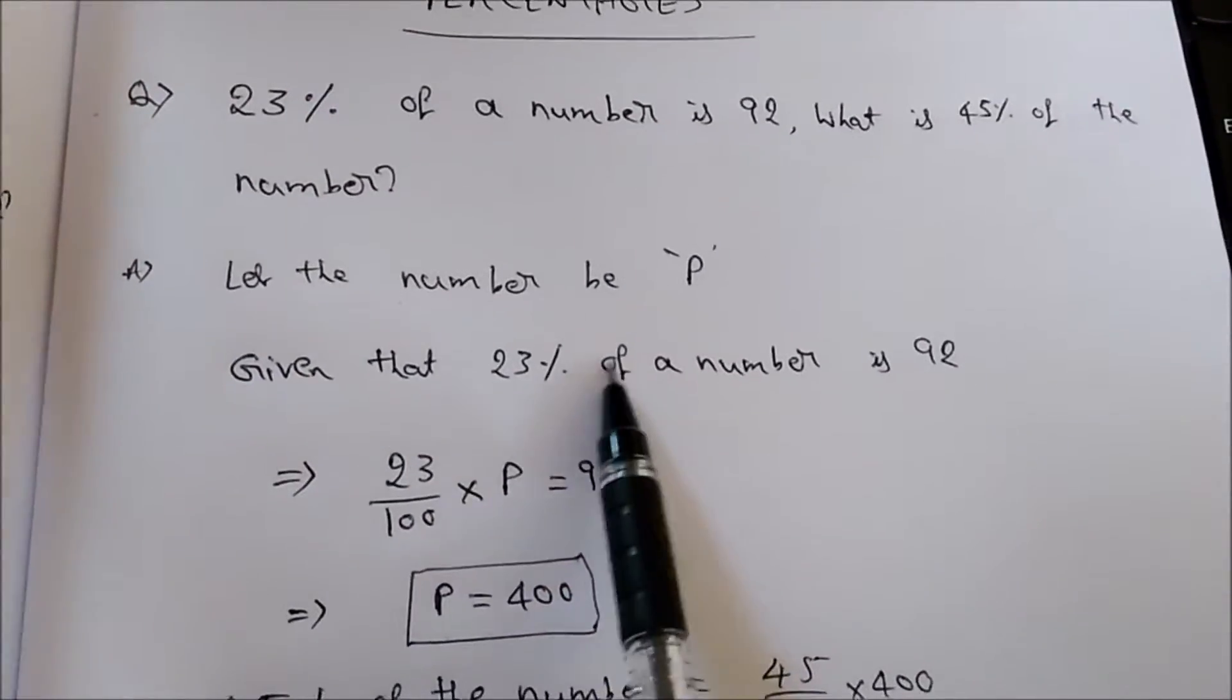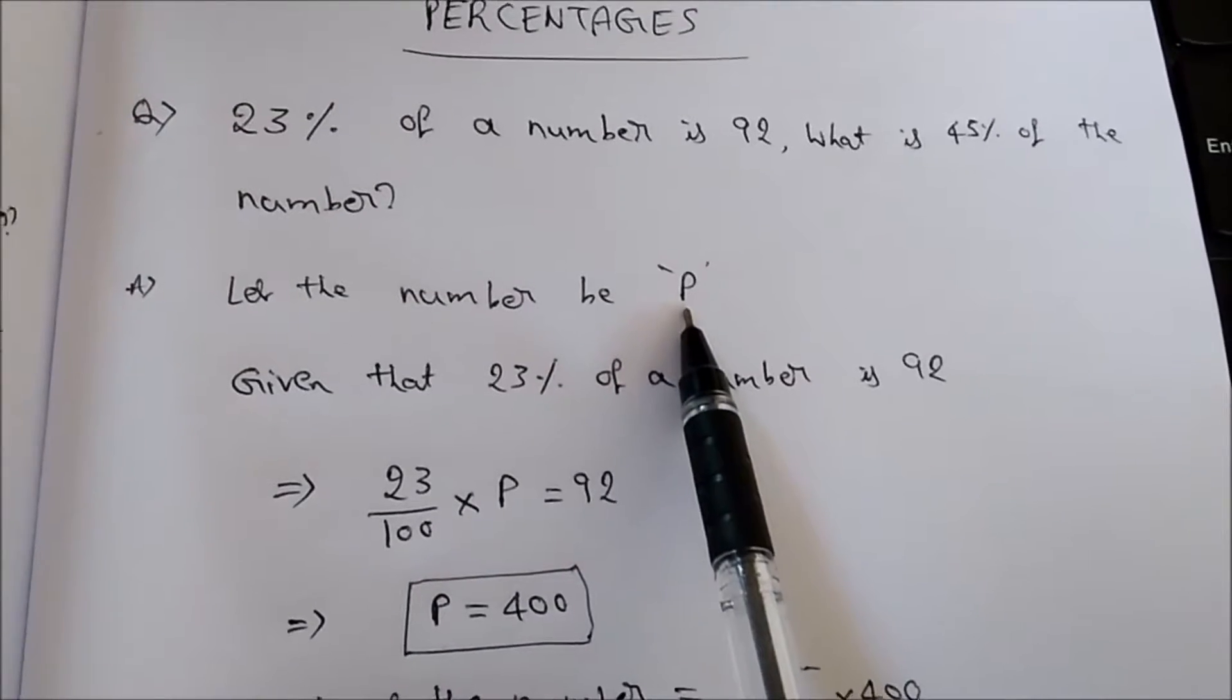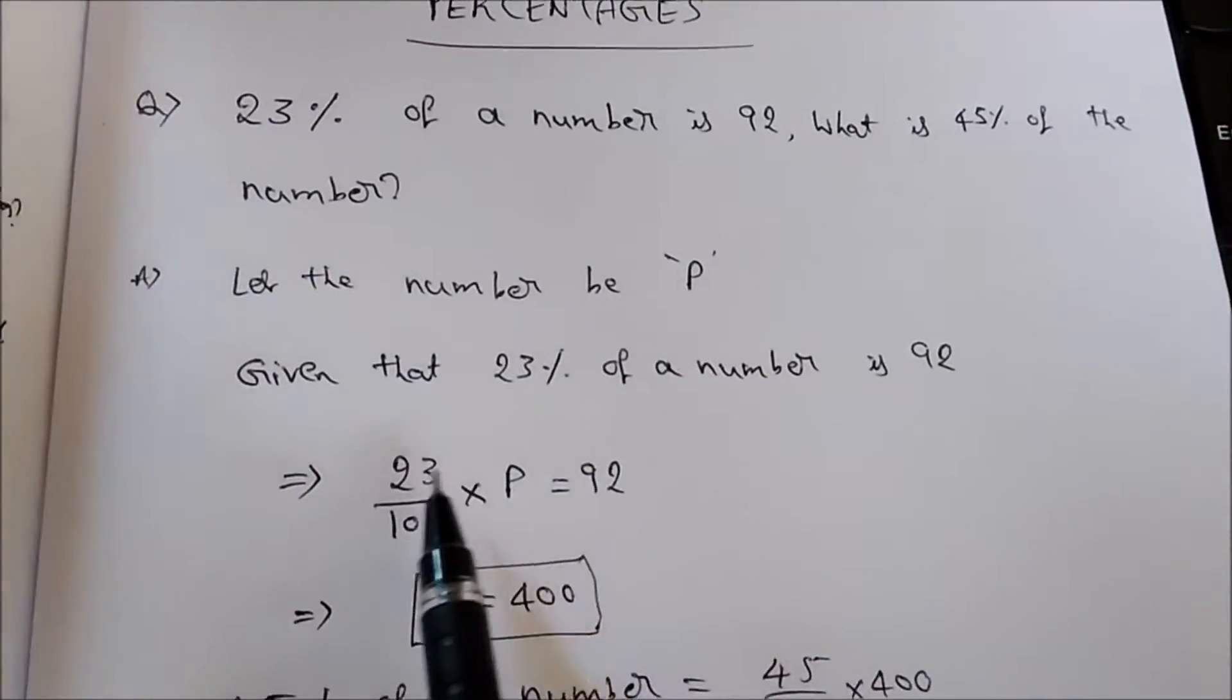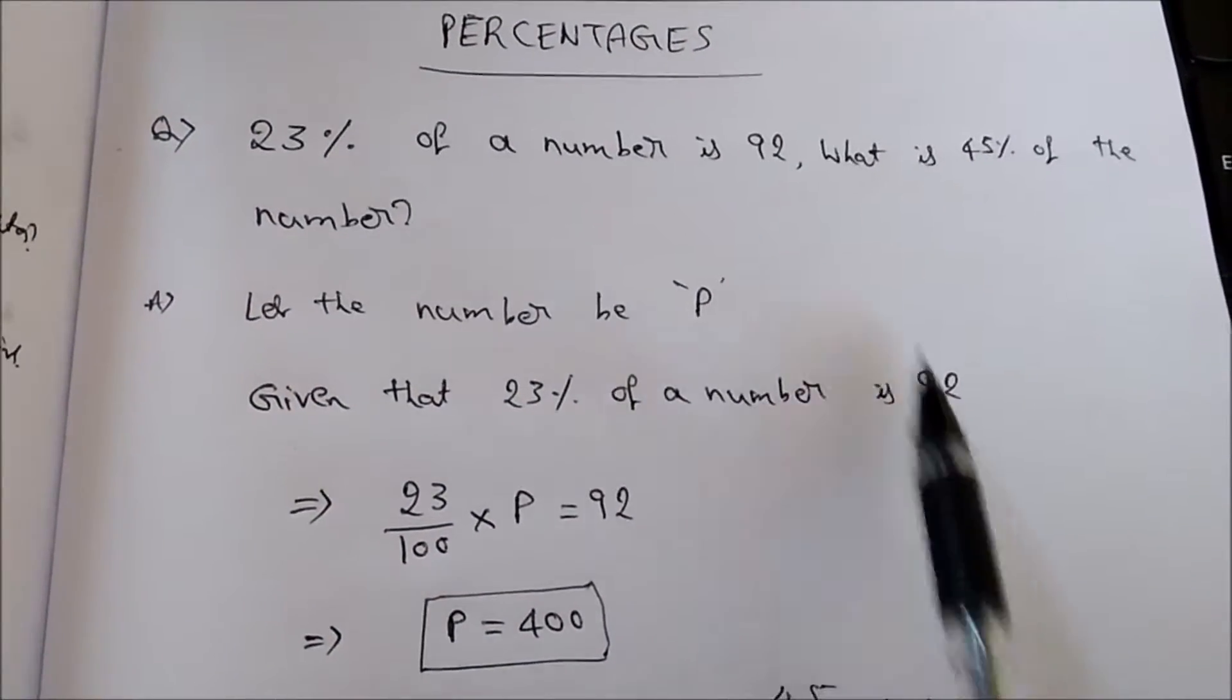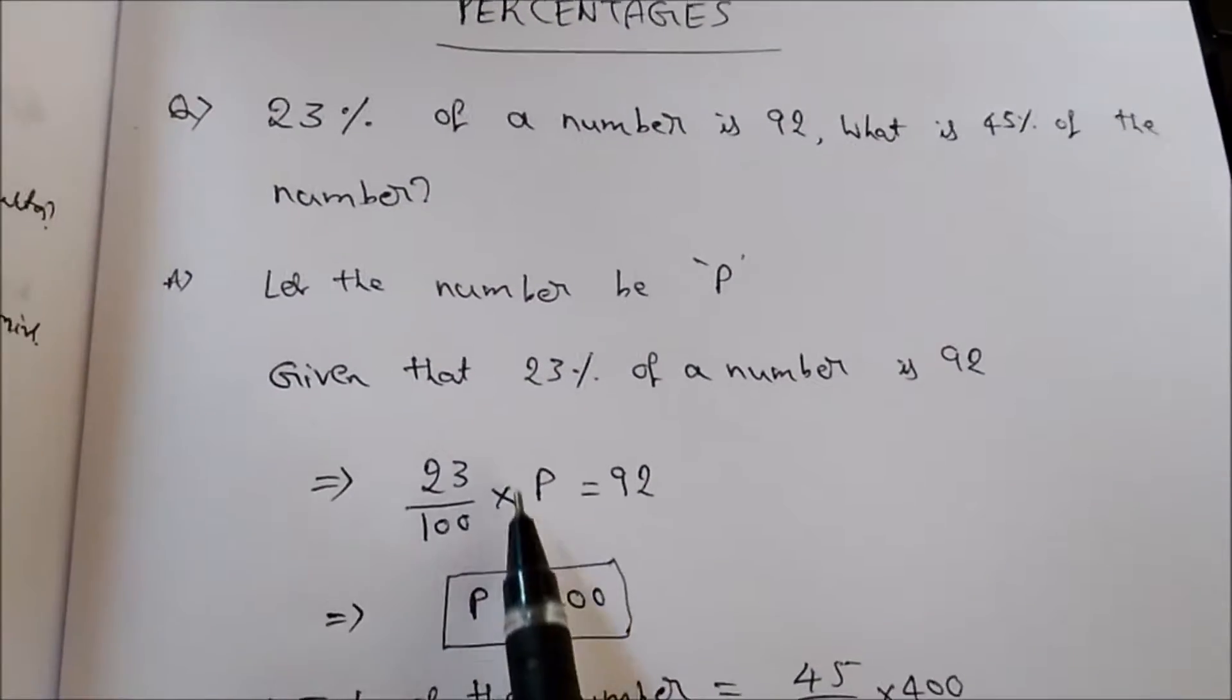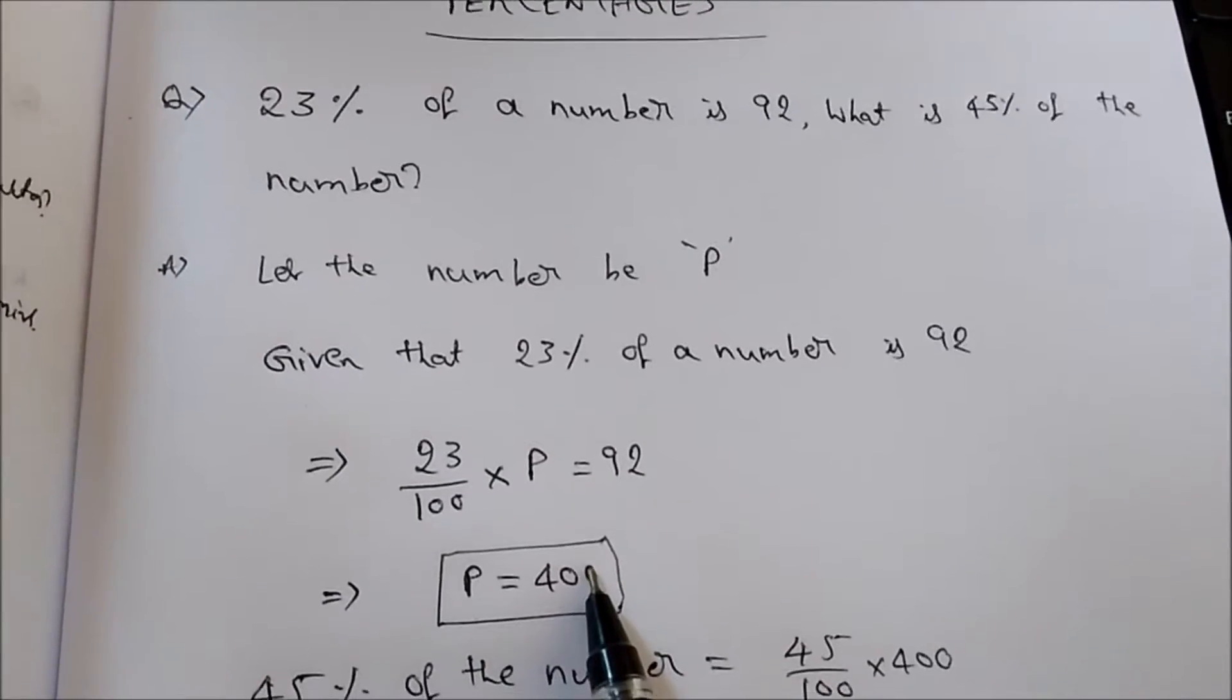Of means multiplication of a number. The required number as we assume is P, so write it as P. So 23% of a number means 23 by 100 into P, its value is 92, is equal to 92. Now when you solve this equation you will get P equal to 400.